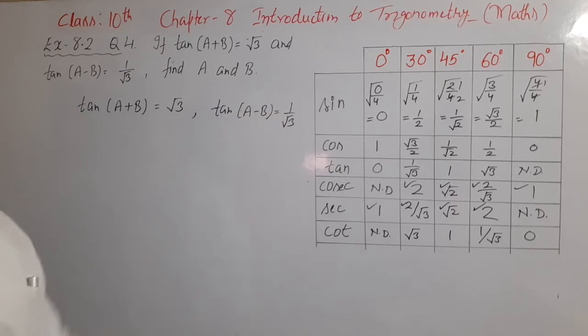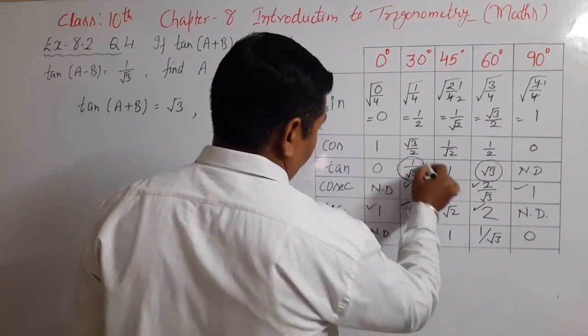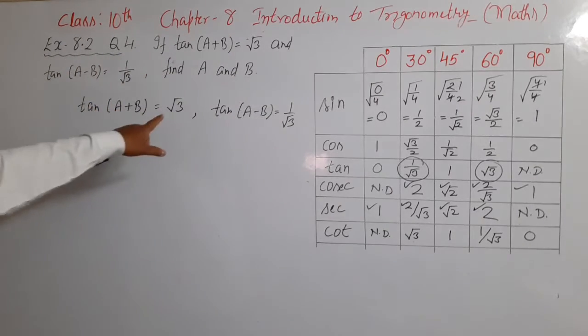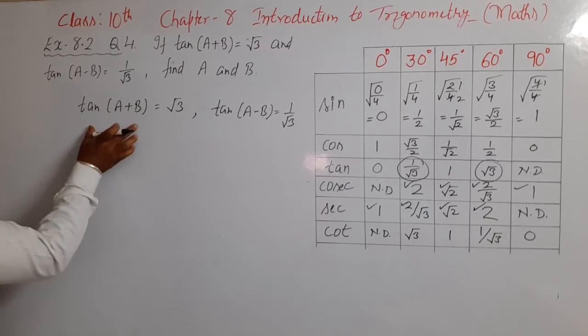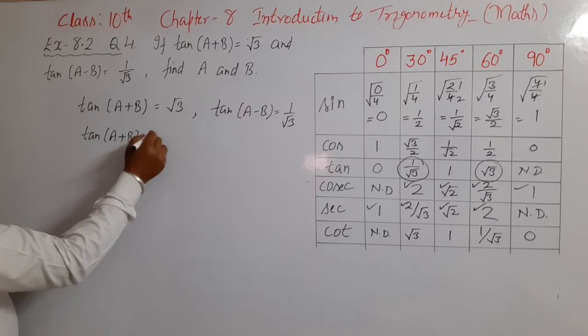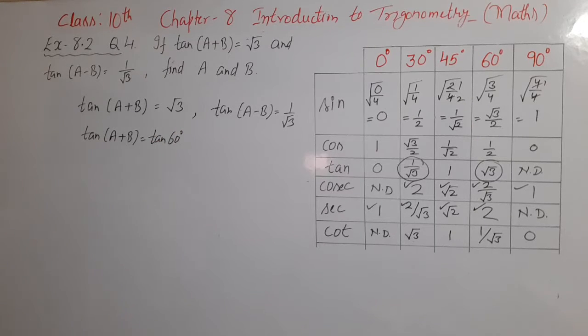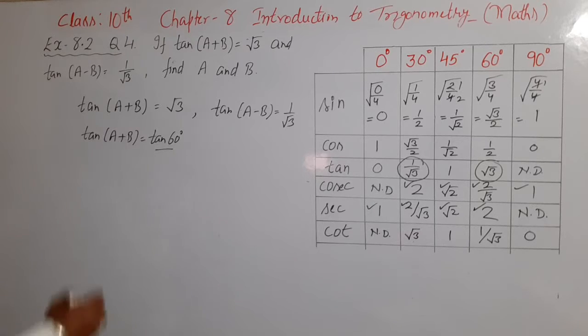Can you see root 3 and 1 upon root 3? You can easily locate these values in the table. This is root 3 and this is 1 upon root 3. Root 3 is the value of tan 60 degree. Can I write tan(A+B) is equal to tan 60 degree? What I have done, I have just used the value of root 3 in terms of tan. I know that root 3 is equal to tan 60 degree, so I have used it here in order to make both sides in same T ratio.